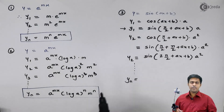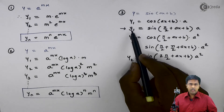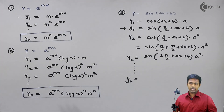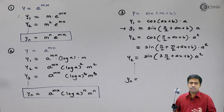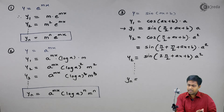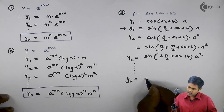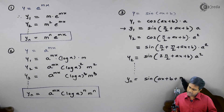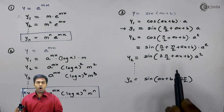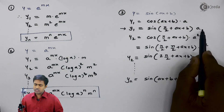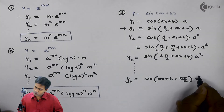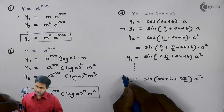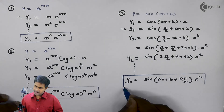Observing the pattern: in the original y, the angle is just ax + b. In y1, the angle is ax + b plus π/2 once. In y2, the angle is ax + b plus π/2 twice. So in the nth derivative, π/2 appears n times. Also, in y1 the constant is a raised to 1, in y2 it is a squared, so in yn it is a raised to n. The formula for the nth derivative of sin(ax + b) is: yn equals a raised to n times sin(ax + b + n·π/2).